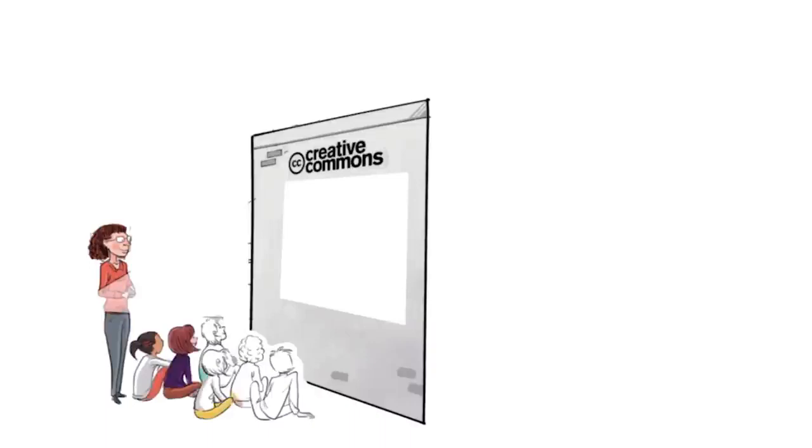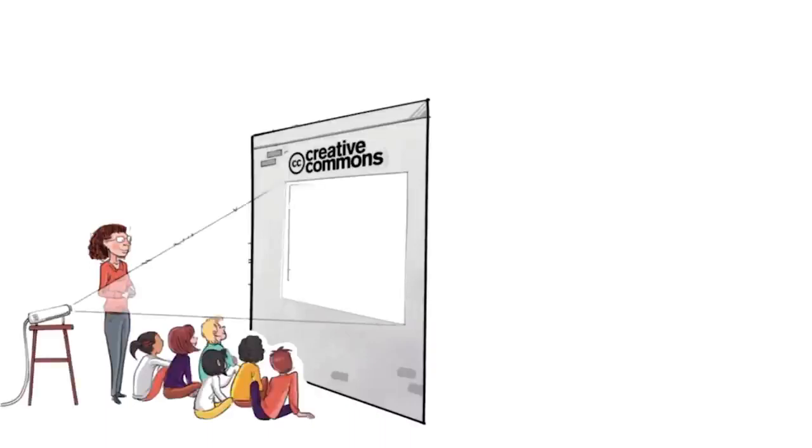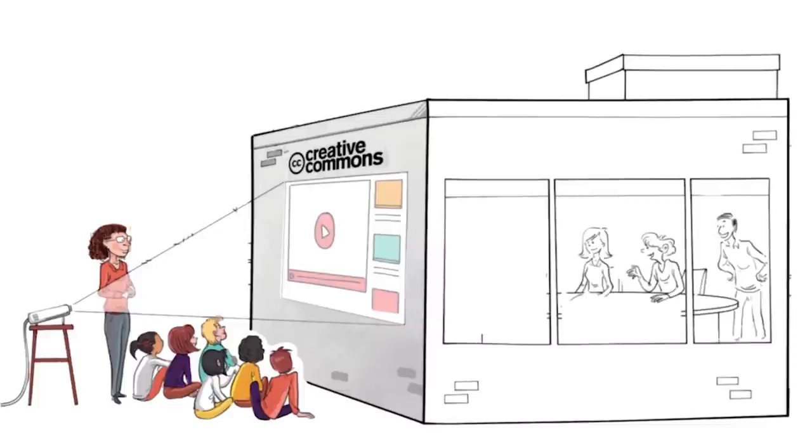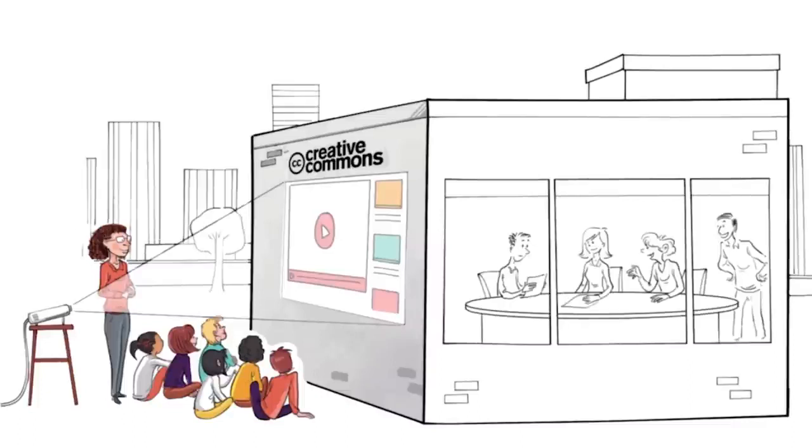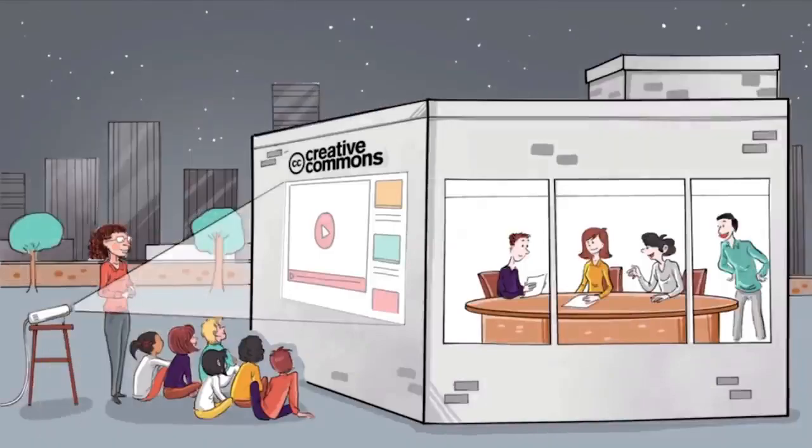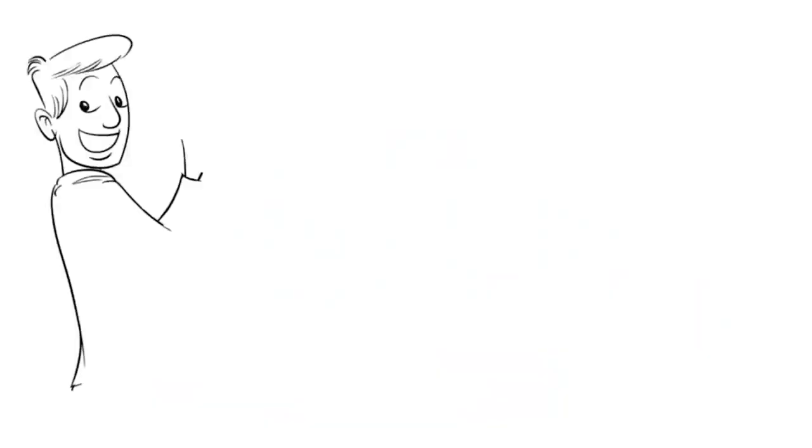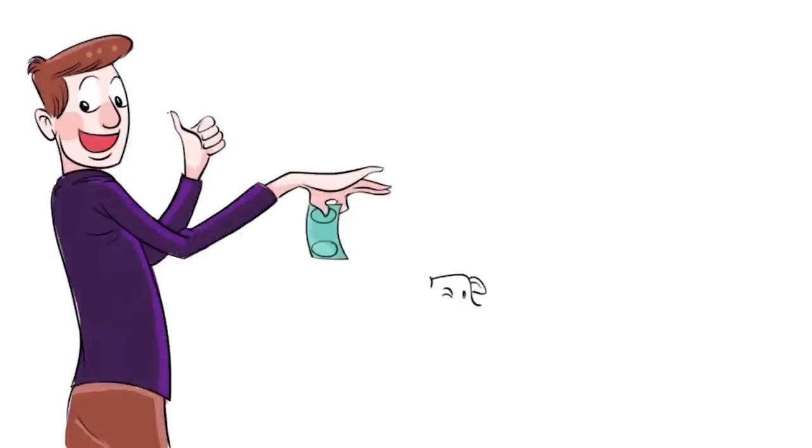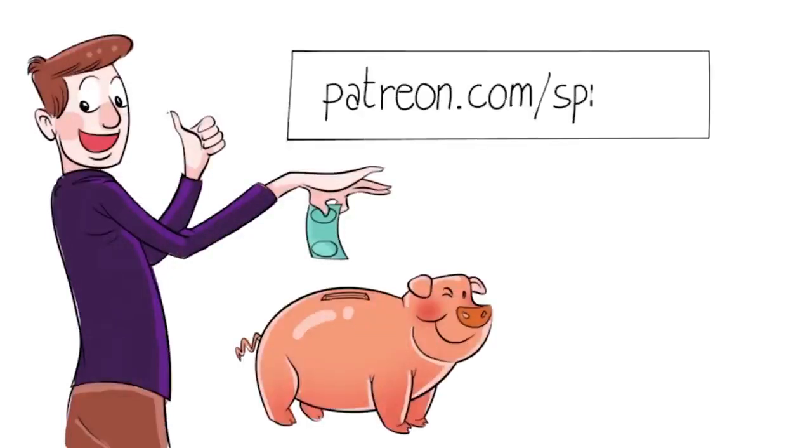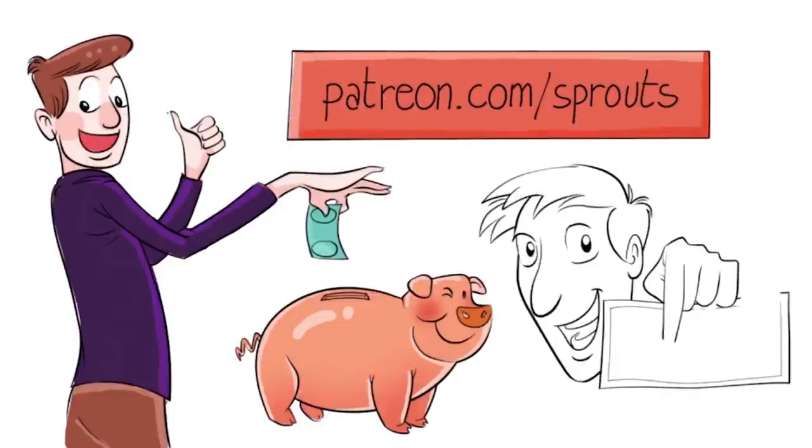Sprouts videos are published under the Creative Commons license. That means our videos are free and anyone can download, edit, and play them for personal use. And public schools, governments, and non-profit organizations can also use them for training, online courses, or designing new curriculums. To help us stay independent and support our work, you can join our patrons and contribute. Just visit patreon.com/sprouts. Even one dollar can make a difference.